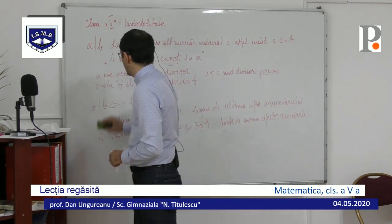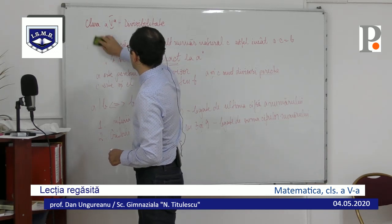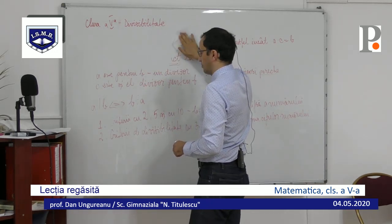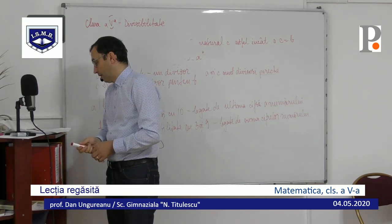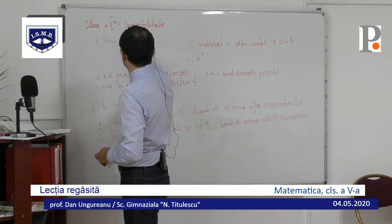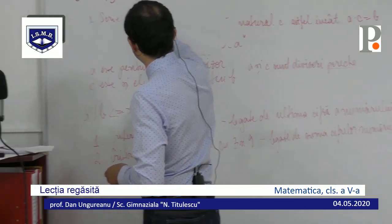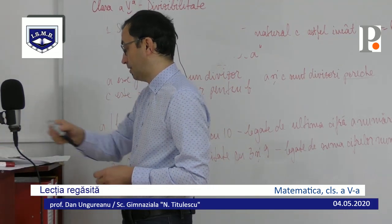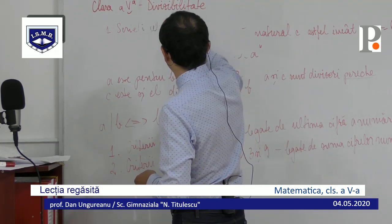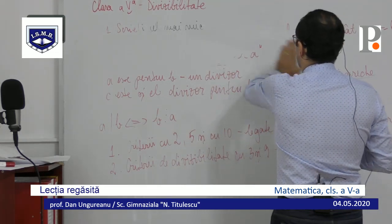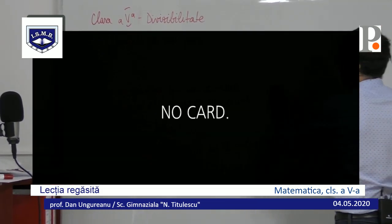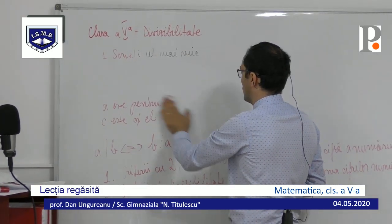Hai să vedem niște exerciții. Primul exercițiu de astăzi: scrieți cel mai mic număr natural de trei cifre distincte, divizibil cu 2. Vă las un pic de timp să vă gândiți singuri și vom scrie rezolvarea și la tablă.